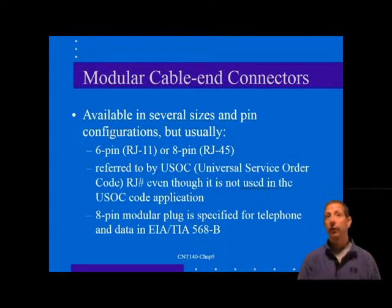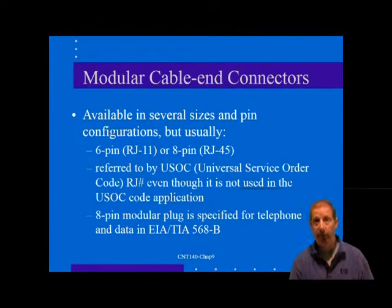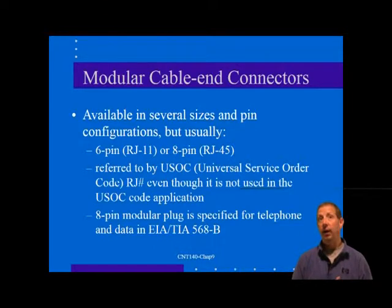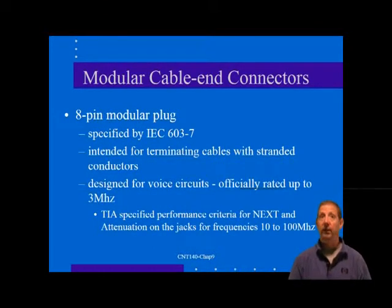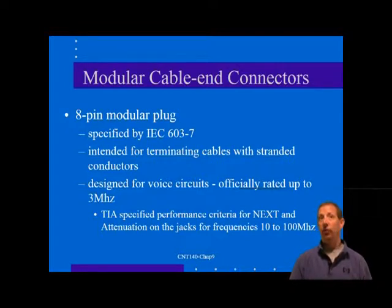The popular styles are often referred to by Universal Service Order Code, the USOC RJ number, even though the connector may not actually be used in the designated application called for by the USOC code. For example, the common 6-pin modular telephone plug is often called an RJ11, and the 8-pin modular plug is often called an RJ45. The 8-pin modular plug is used in the TIA 568-C wiring standard for both telephone and data, and is also the connector used for 10Base-T, 100Base-T, 1000Base-T, Token Ring, UTP, and many other LAN applications. This 8-pin modular plug is probably the most subject to name abuse because it resembles the specialized RJ45 connector.